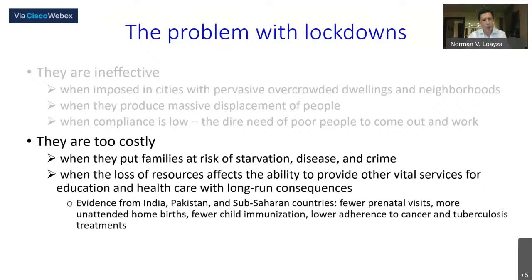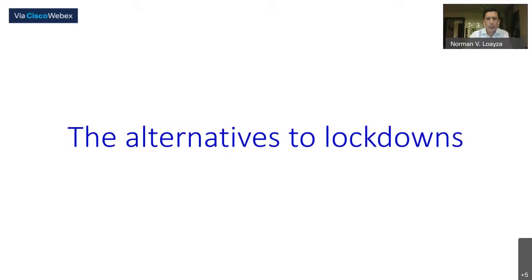Lockdowns are too costly when the loss of public resources affects the ability to provide vital services for education and health care, with long-run consequences. There is evidence from India, Pakistan, and sub-Saharan African countries that during lockdowns there have been fewer prenatal visits, more unattended home births, fewer child immunizations, and lower adherence to cancer and tuberculosis treatments. According to a recent paper from Johns Hopkins University, for every life saved from the pandemic in sub-Saharan Africa, 140 children could die because they have not received their vaccinations.